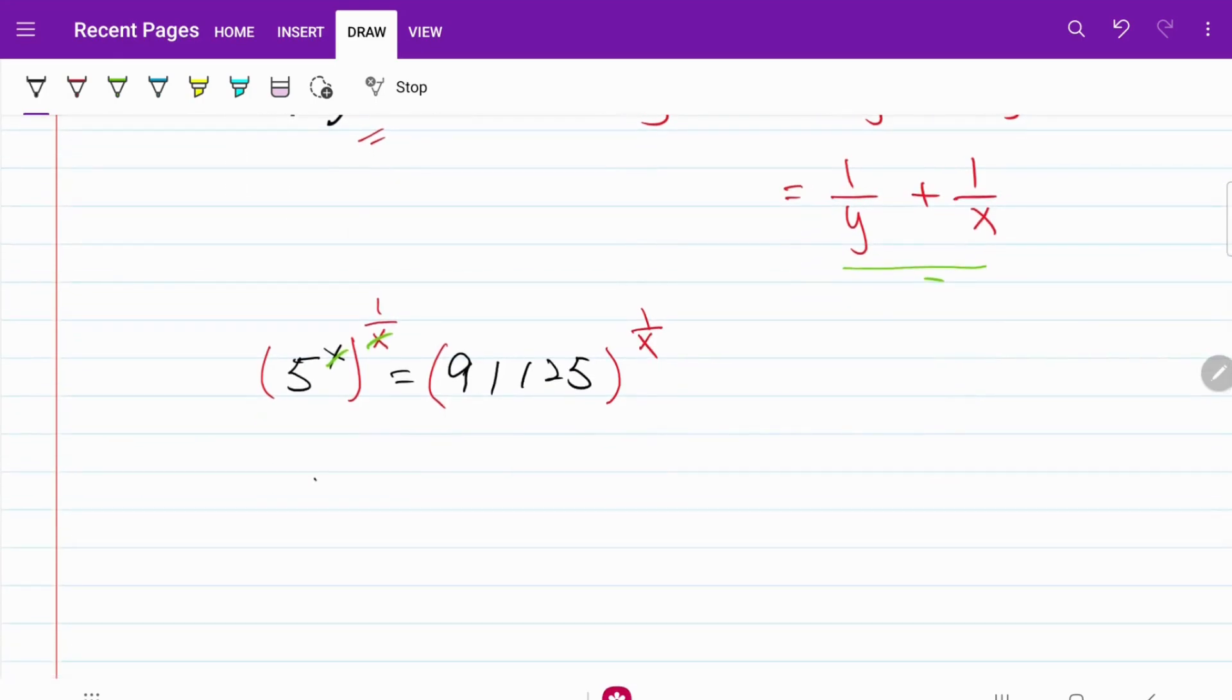So what I now have is 5 to the power of 1 is equal to 91,125 to the power of 1 over x. That solved the first part of this expression.